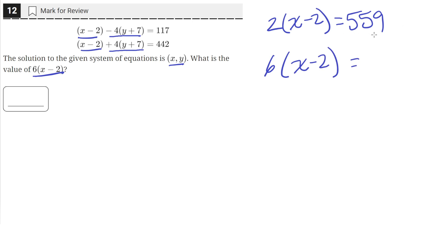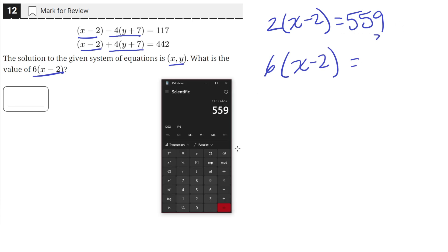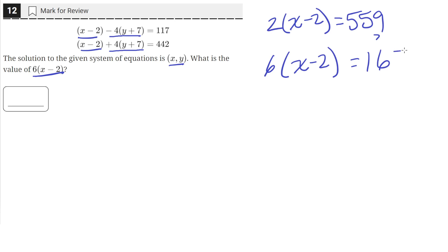And then 3 times 559. So 3 times 559 is equal to 1677.